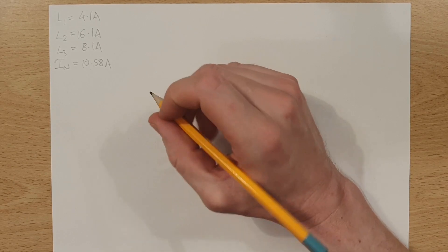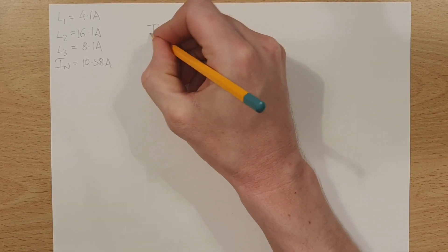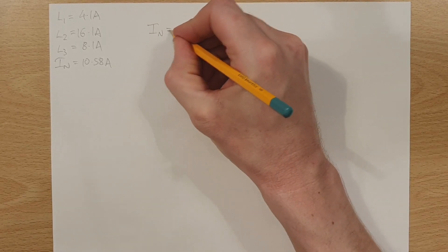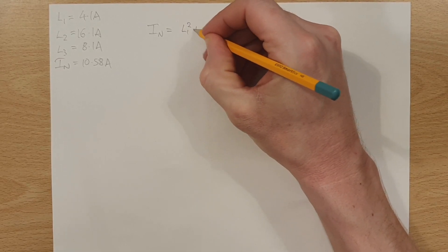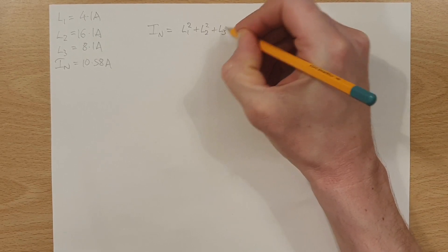So what we're going to do in this video is we're going to use this formula. Now, this might seem a little bit scary at first, but let's just get it down on paper. So the current in the neutral will be equal to, let's start off by doing this, L1 squared plus L2 squared plus L3 squared, bearing in mind that these three numbers are the currents that we find in L1, L2, and L3.